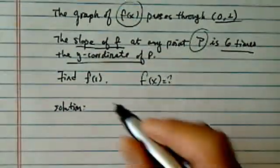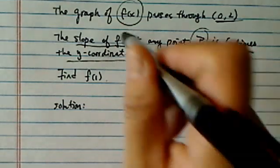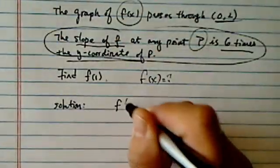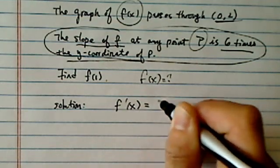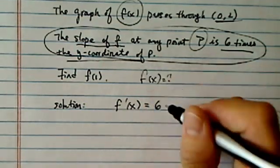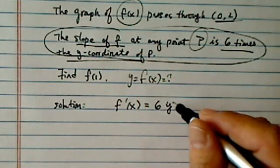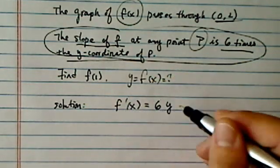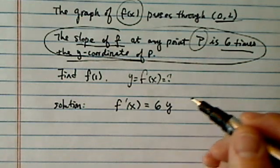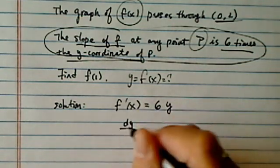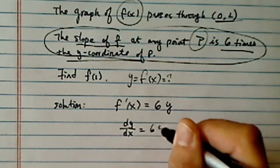So let's get started. Let's translate the slope. It says slope of f, which is really saying f prime of x is equal to 6 times the y-coordinate. Okay, so if you have y equal to f of x and f prime is equal to 6y, the way we would solve this one, let's put this one into dy/dx is equal to 6y.